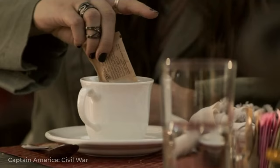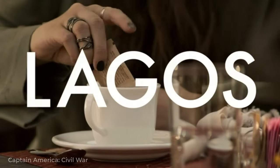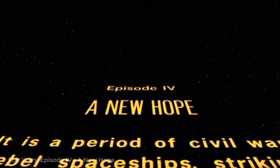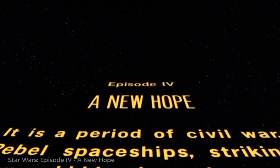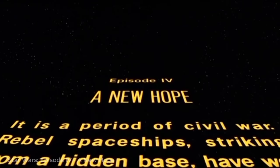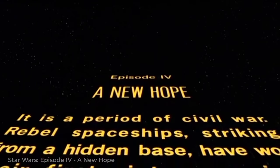Overlaid text can tell the audience simple information, like the location or date of a scene, or can be as elaborate as the opening crawl in Star Wars. Whatever you need to communicate, there's a simple format to ensure your reader understands your intention.